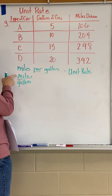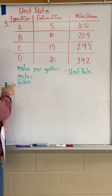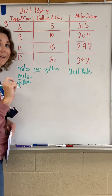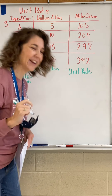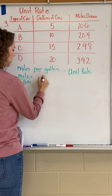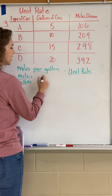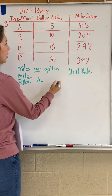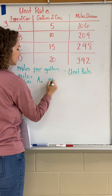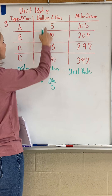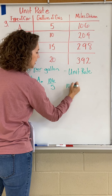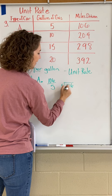Miles per gallon — that fraction bar means to divide. So we're going to do car type A. The number of miles car A drives is 106, and the number of gallons is 5. So we've got 106 divided by 5.